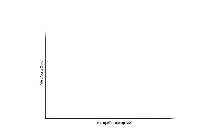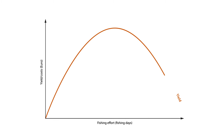Look at this graph where we have the fishing effort — think of the fishing days — on the horizontal axis, and the yield on the vertical axis. The yield curve typically is first increasing, reaches a maximum, and then it's decreasing. This is equilibrium yield. It means how that effort, continuous effort, has an effect on the fish stocks and thus on the yield that these fish stocks can deliver in equilibrium.